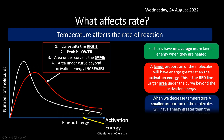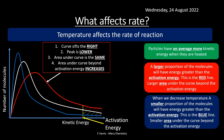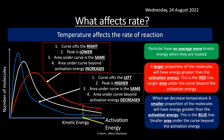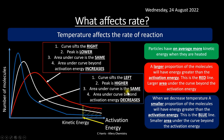When drawing a heated Maxwell-Boltzmann curve: the curve is slightly to the right, the peak is lower, the total area under the graph is the same, and the area beyond the activation energy increases. The heated curve should only cross the original line once — never again lower down. For a cooled gas, the curve shifts left, the peak is higher, and the area beyond the activation energy is smaller.